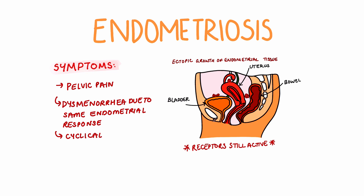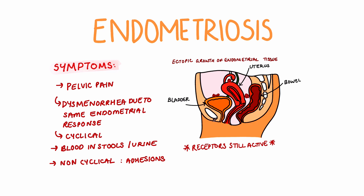If endometrial tissue is deposited in areas of the bowel or bladder, patients may also see bleeding in their urine or faeces. In some cases, long-term inflammation can cause adhesions and scar tissue, presenting as chronic non-cyclical pain. On examination, these patients may not have any distinct signs, but the main finding includes tenderness in the vagina, adnexa, and the cervix.